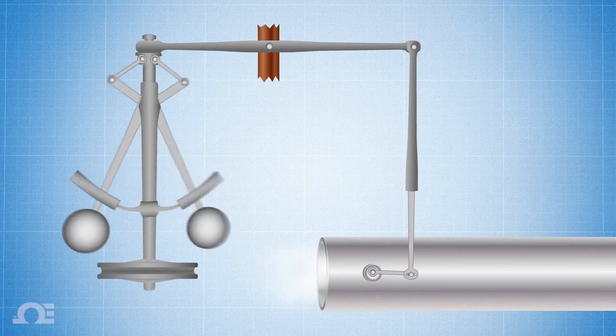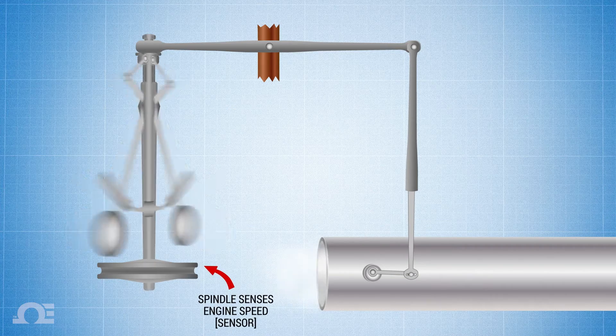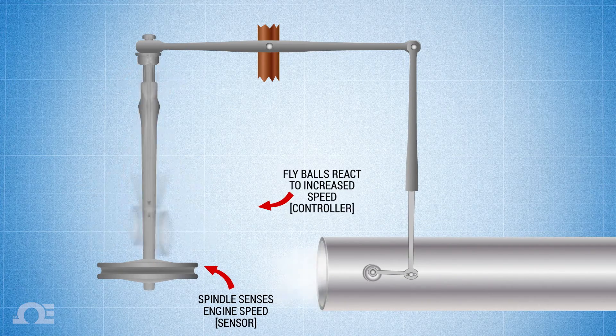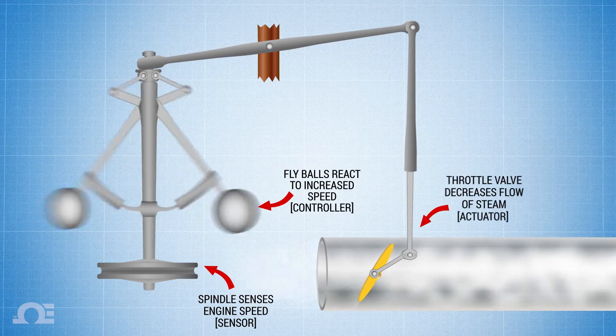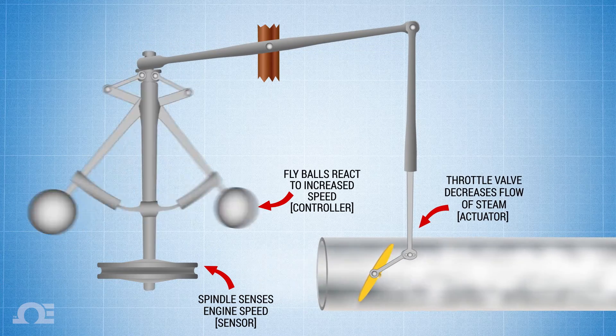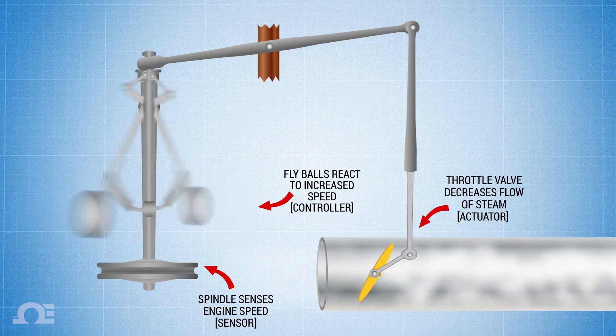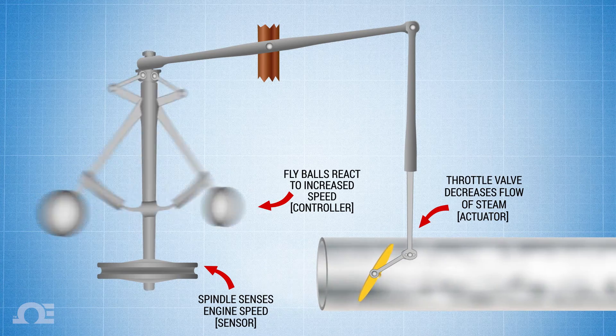Compare that to Watt's fly ball governor, and you've got the spindle sensing the speed of the engine, with the fly balls reacting to the increased speed, and like a controller, engaging the throttle valve, which in this case is the actuator, reducing the amount of steam going to the cylinders, thus bringing the speed of the engine back into a safe range.